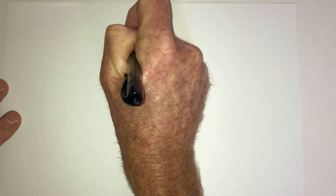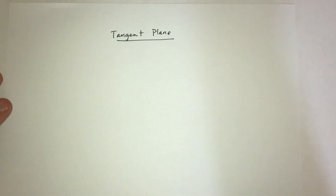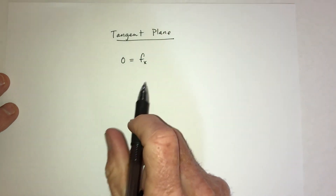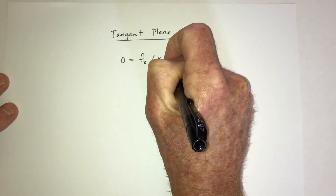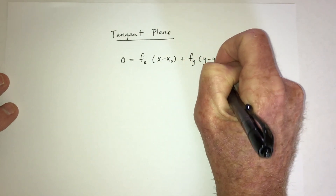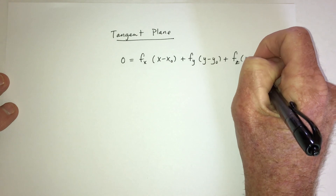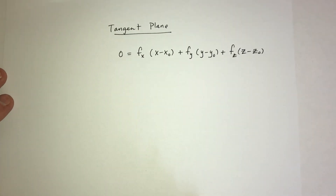For the tangent plane, it's similar to the 2D case but with more variables. The formula is: 0 equals the derivative with respect to x evaluated at (x₀, y₀, z₀), times (x minus x₀), plus the derivative with respect to y times (y minus y₀), plus the derivative with respect to z times (z minus z₀). That is the equation for the tangent plane.